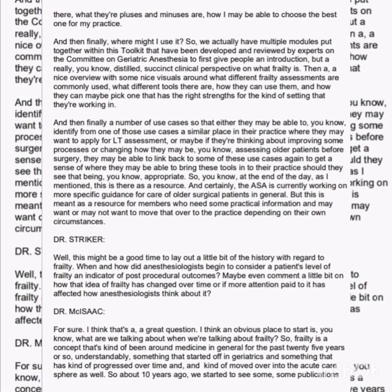We have multiple modules within the toolkit developed and reviewed by experts on the Committee on Geriatric Anesthesia. These give a distilled, succinct clinical introduction to frailty, an overview with visuals of different frailty assessments and tools, and a number of use cases where practitioners can identify situations similar to their own practice. Members may be able to link back to these use cases when thinking about improving processes or assessing older patients before surgery. The ASA is also currently working on more specific guidance for care of older surgical patients in general, but this toolkit serves as a practical resource for members depending on their circumstances.